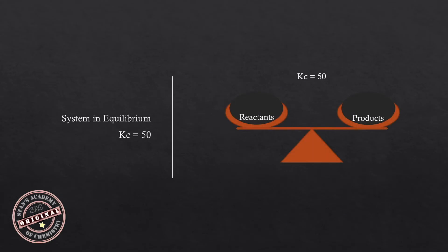Here is the graphical representation. For the reaction we discussed, if the system is in equilibrium, the amounts of reactants and products at the equilibrium state and the rates of the forward and backward reactions show a constancy. This represents a state of equilibrium.